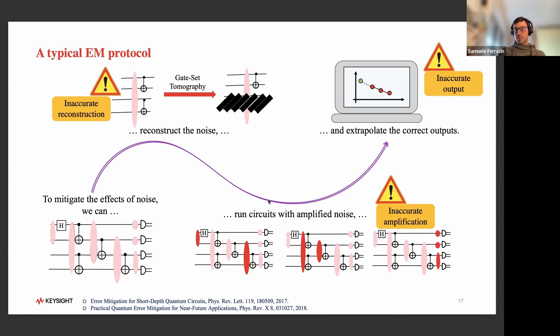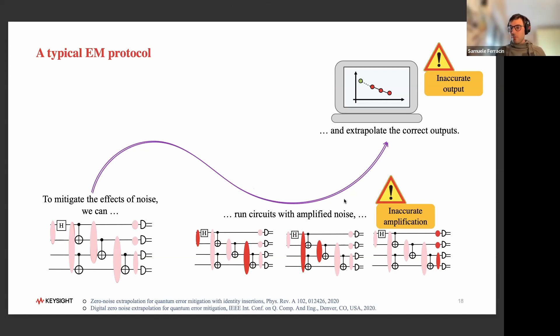This is a problem people are aware of. People have been trying to think of solutions for a while. One method is to amplify noise in smart ways that don't rely on noise reconstruction. The problem is these protocols require assumptions of the noise. You would typically assume the noise is depolarizing or it commutes with the gates. The problem is, in general, the noise will not abide to these conditions, so again, inaccurate amplification and inaccurate mitigation. This was the landscape of error mitigation protocols when we started the project. We felt we had an alternative to gate set tomography that could be really useful in this scenario.